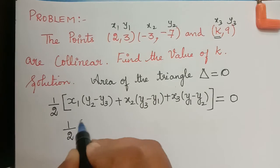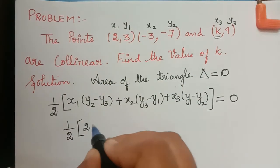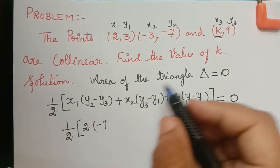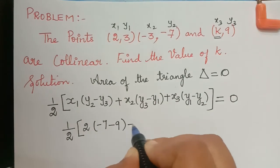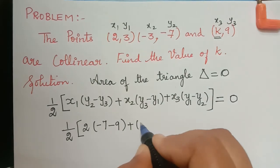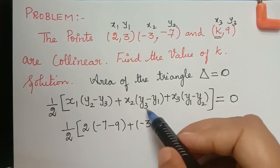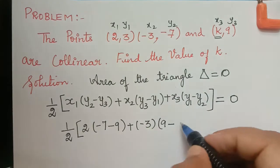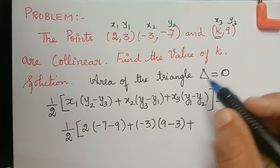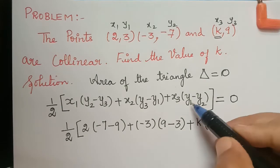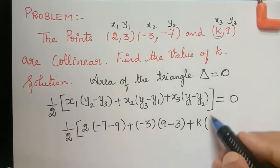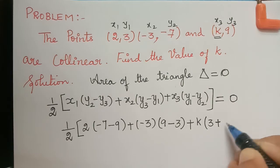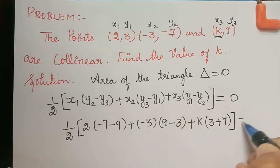So we obtain 1/2 of: x1 is 2, multiplied with (y2 minus y3) — y2 is -7, minus y3 which is 9 — plus x2, which is -3, multiplied with (y3 minus y1) — y3 is 9, minus y1 is 3 — plus x3, which is k, multiplied with (y1 minus y2) — y1 is 3, minus y2 is -7, so minus of -7 becomes plus 7. This is equal to zero.